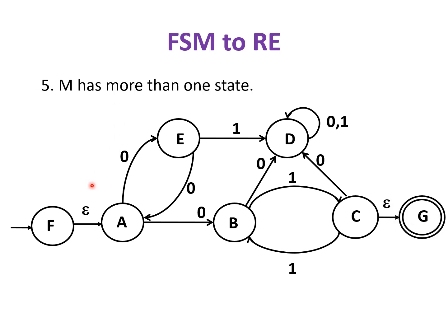At this point of time, if the machine has only one state, that is start state itself is an accepting state, then the machine will halt and the regular expression obtained is epsilon. Whereas, we have many states in this machine.